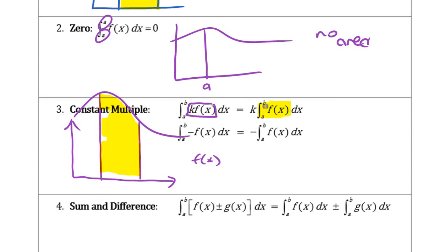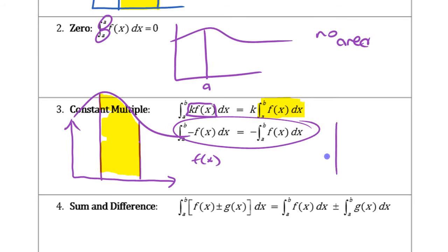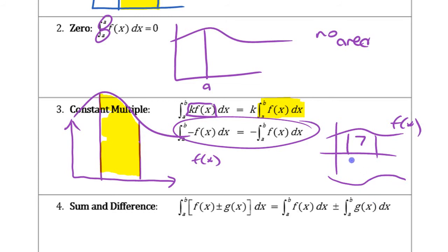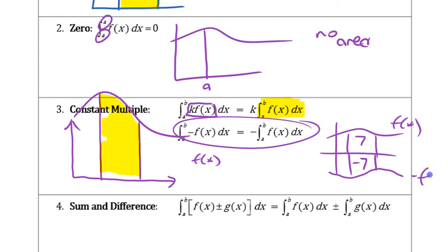If you know the area of the original function, it's just a constant times that area. The second thing here is just a special case of that. If you have a function that's above the axis and you know that area — let's say this is 7, this is f of x — if you graph negative f of x, that area below is going to be negative 7 if you reflect it.